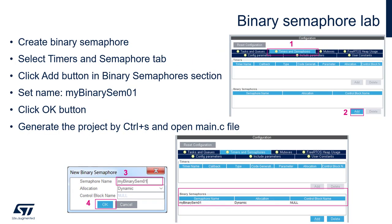Let's come back to our FreeRTOS configuration. Please select the Timers and Semaphores tab, click on Add within the Binary Semaphores section, and create a new semaphore. Its name can be MyBinarySem01; the rest we can keep in the default state. Then press OK. You should now see this new semaphore within the Binary Semaphores list.